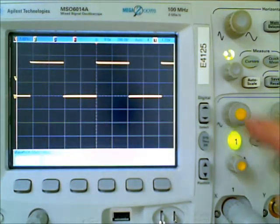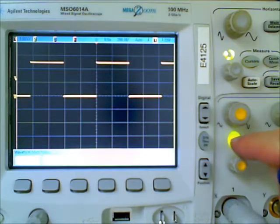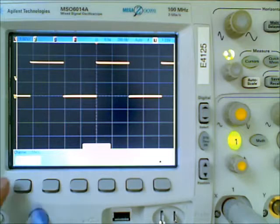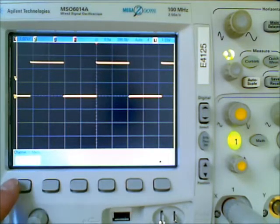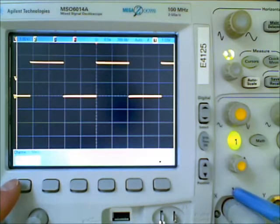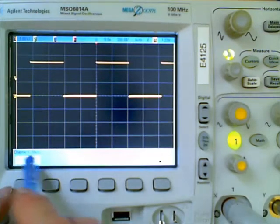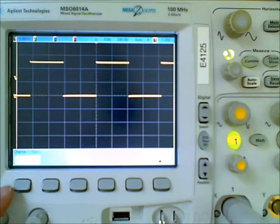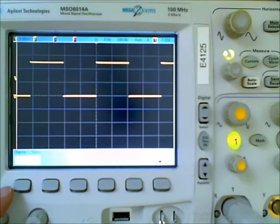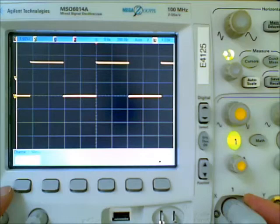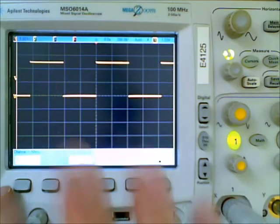All right, so these functions that are controlled here, we press the button number one here and there's a number of menu items that come up. The first menu item is the one that I want to spend some time on and that is coupling. When the signal goes in through the channel it's processed through some circuitry. DC coupling is what it says here. DC coupling means direct coupled so everything that's on the waveform, everything that's on the channel, everything that's being put into the front end of the amplifier of the oscilloscope is displayed on the screen.